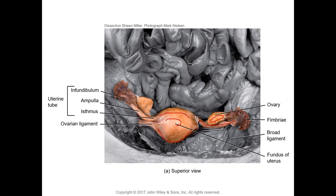The lateral end of the fallopian tube is known as the infundibulum. You see these finger-like projections on the lateral end — these are the fimbriae. This pouch-like area is known as the infundibulum. The lateral two-thirds is the ampulla, the wider part of the fallopian tubes. The slightly more narrow part closer to the uterus is known as the isthmus, which opens into the lateral walls of the uterus. The oocytes — the gametes — are produced in the ovary and carried through the uterine tube into the uterus where the fertilized zygote implants to grow into a fetus.